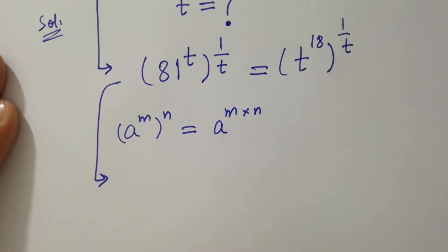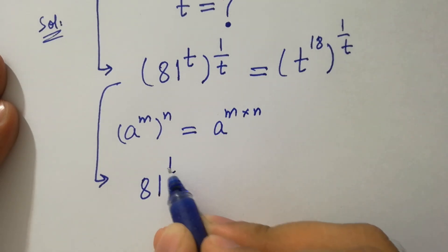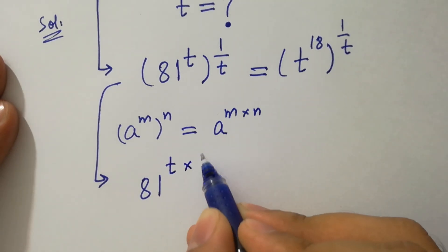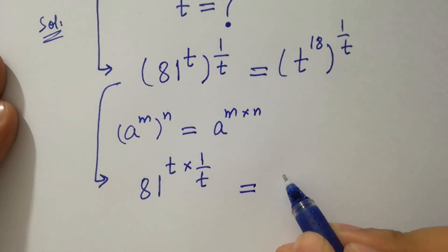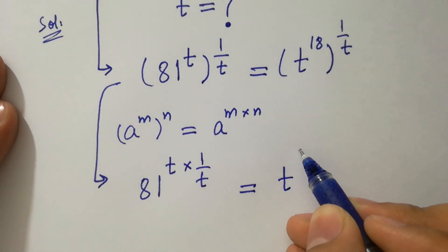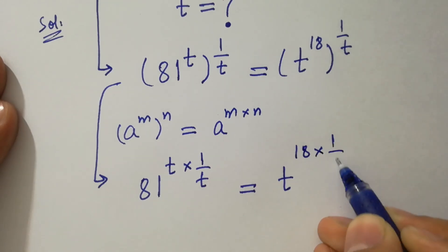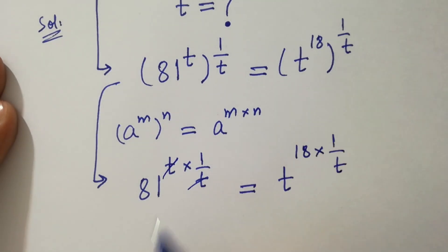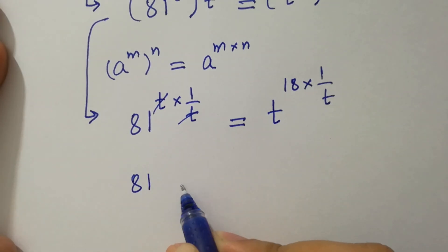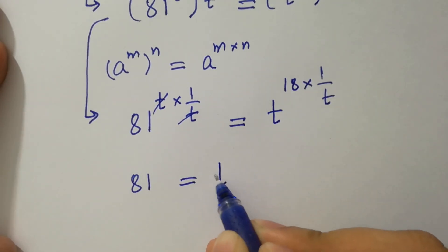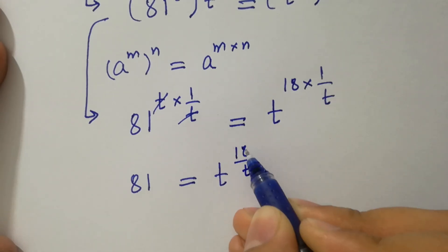Then it will be 81 to the power t times 1 over t, equal to t to the power 18 times 1 over t, where t cancels. So we get 81 equal to t to the power 18 over t.